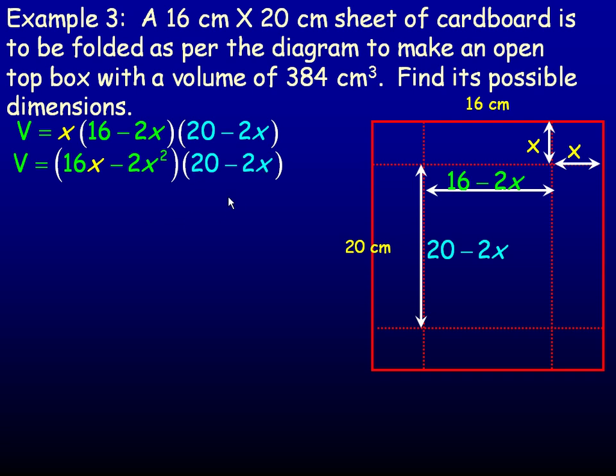And I'm not going to show all the steps here, but when we simplify this, for example, negative 2x squared times negative 2x is 4x cubed.